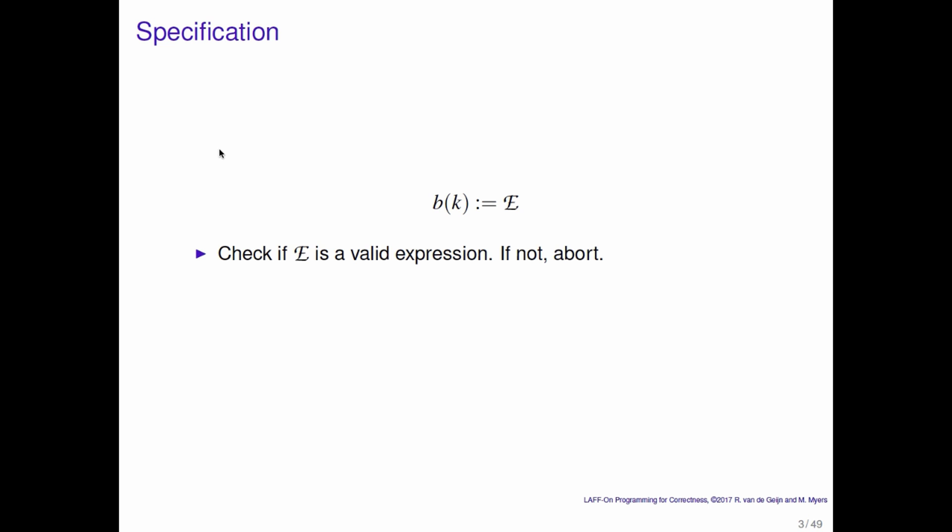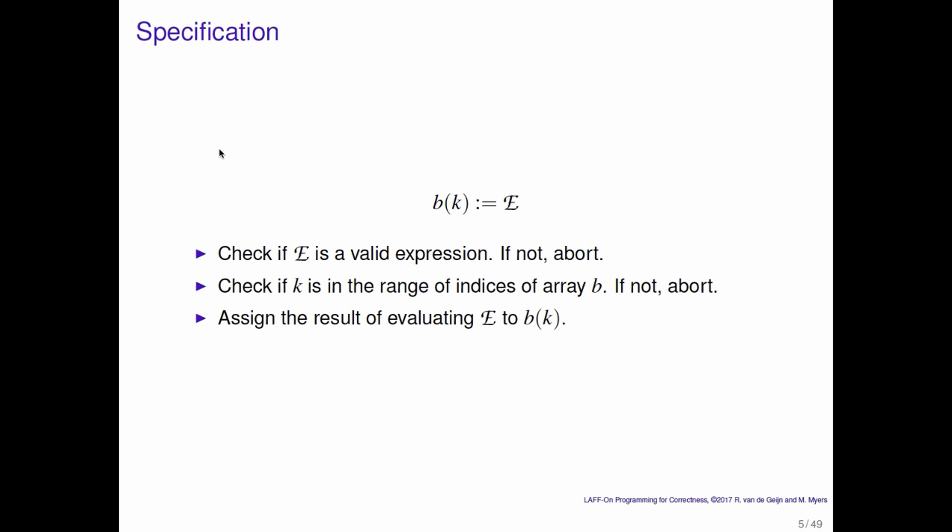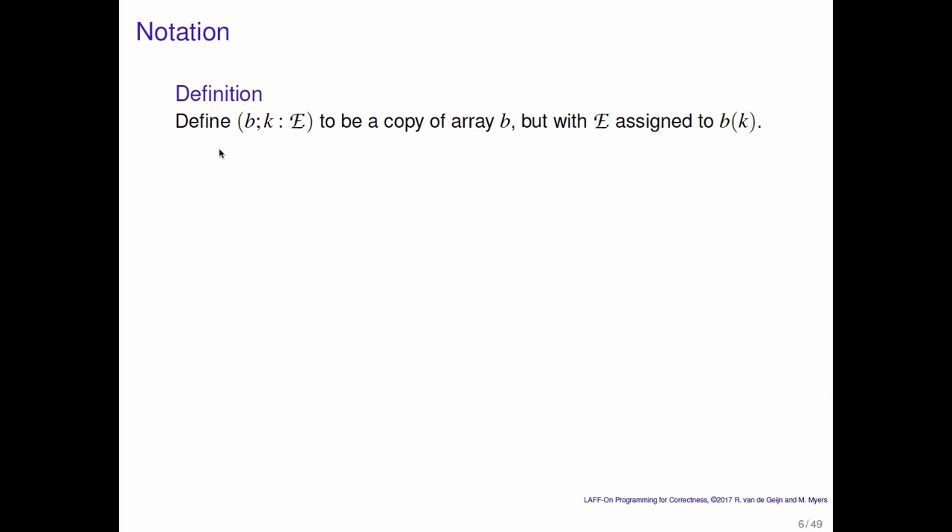Here's the specification. We have an expression e. We want to assign it to the element of b indexed by k. We need to check if e is a valid expression — if not, we abort. We need to check if k is in the range of indices of array b — if not, we abort. If we get past that, we evaluate expression e and assign the result to the element of b indexed by k. To do this cleanly, we define the expression b with the element indexed by k replaced by the result of evaluating expression e — written as b semicolon k colon e — which is a copy of array b but with the element indexed by k assigned the result of evaluating expression e.